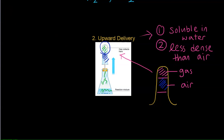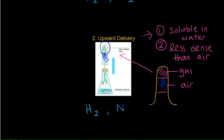So what are some of the gases that can be collected this way? We have hydrogen and ammonia, which is NH3.